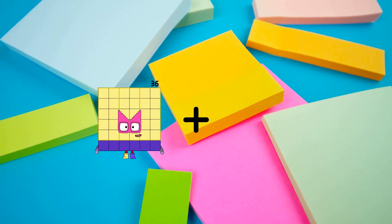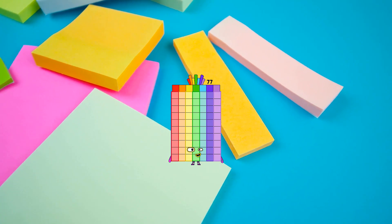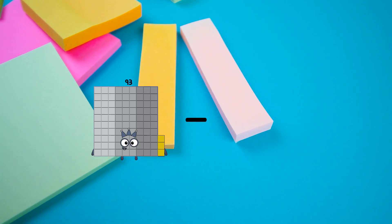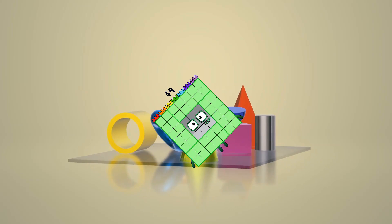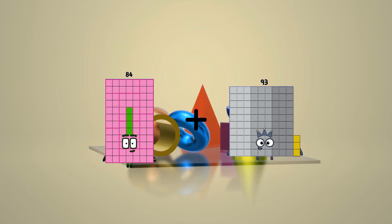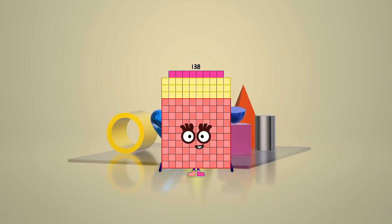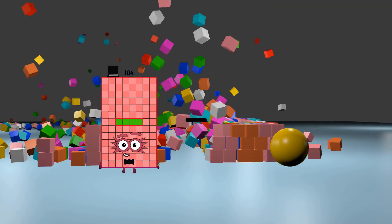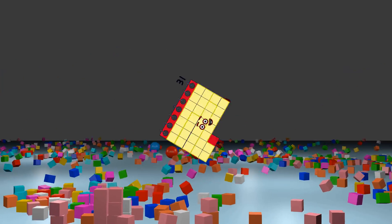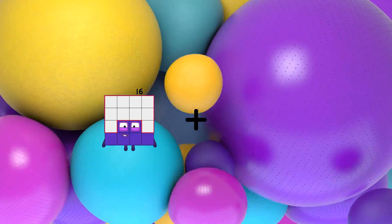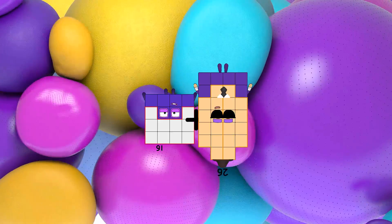36 plus 41 equals 77, 93 minus 44 equals 49, 84 plus 54 equals 138, 104 minus 73 equals 31, 16 plus 26 equals 42.